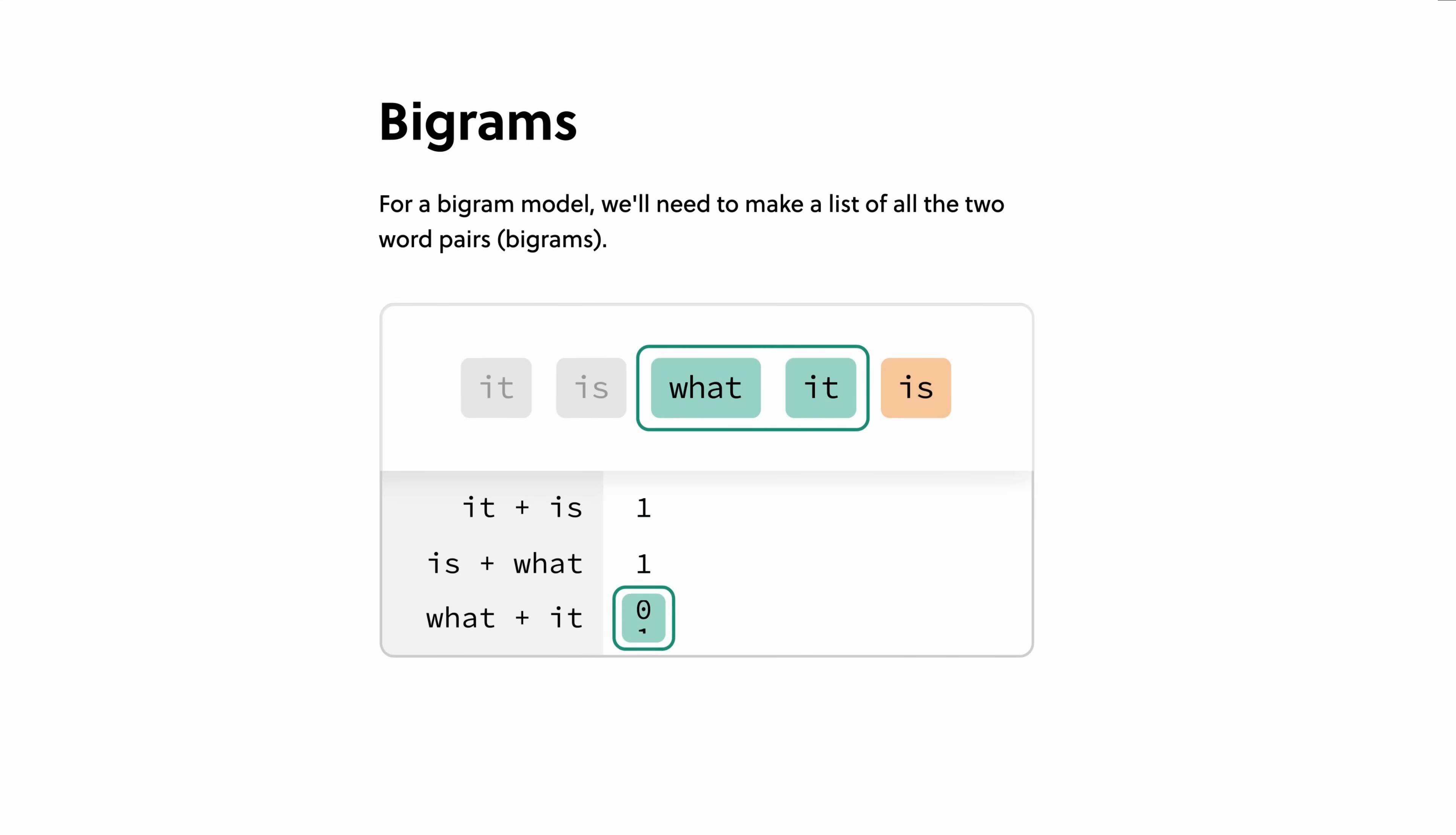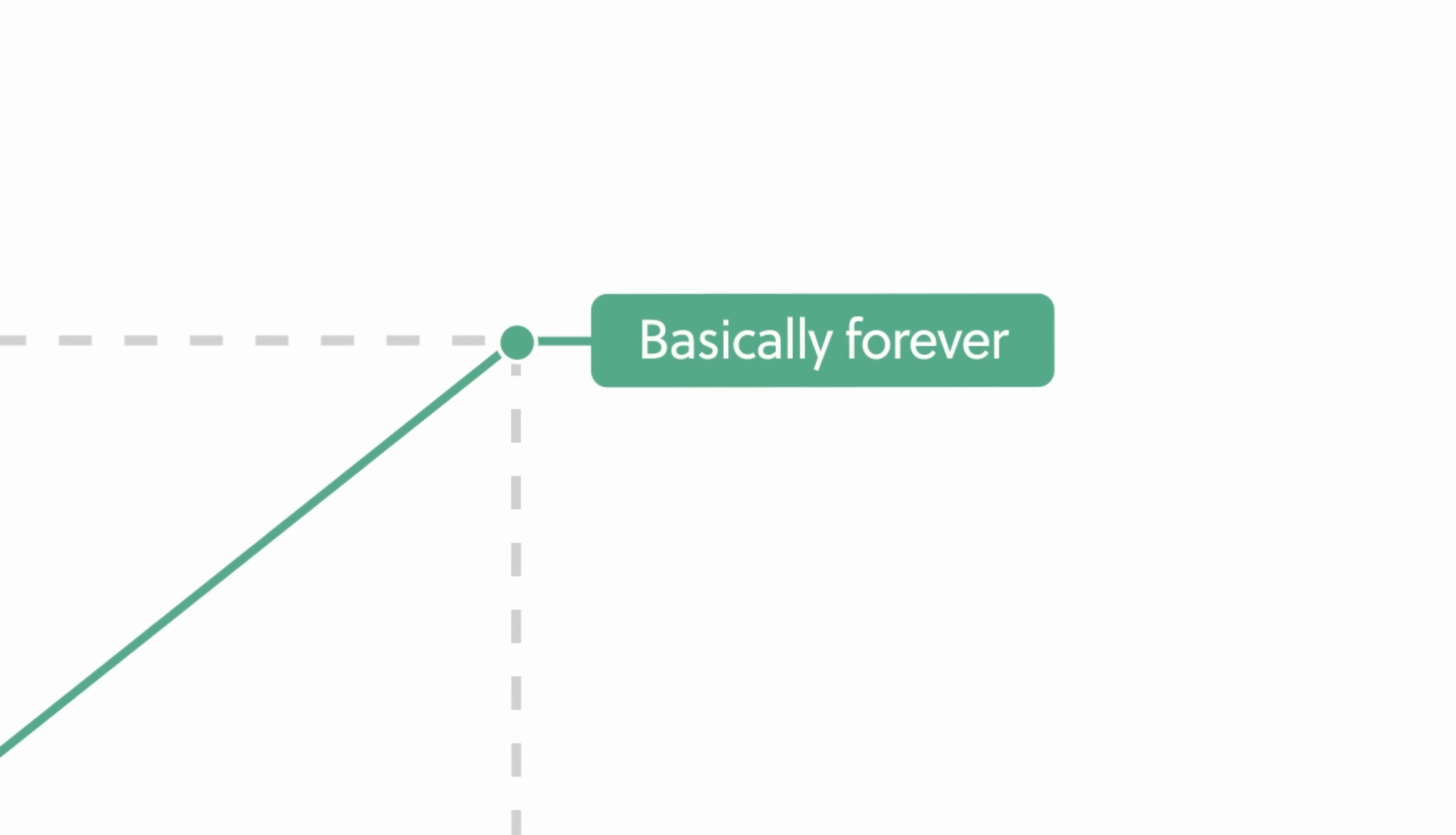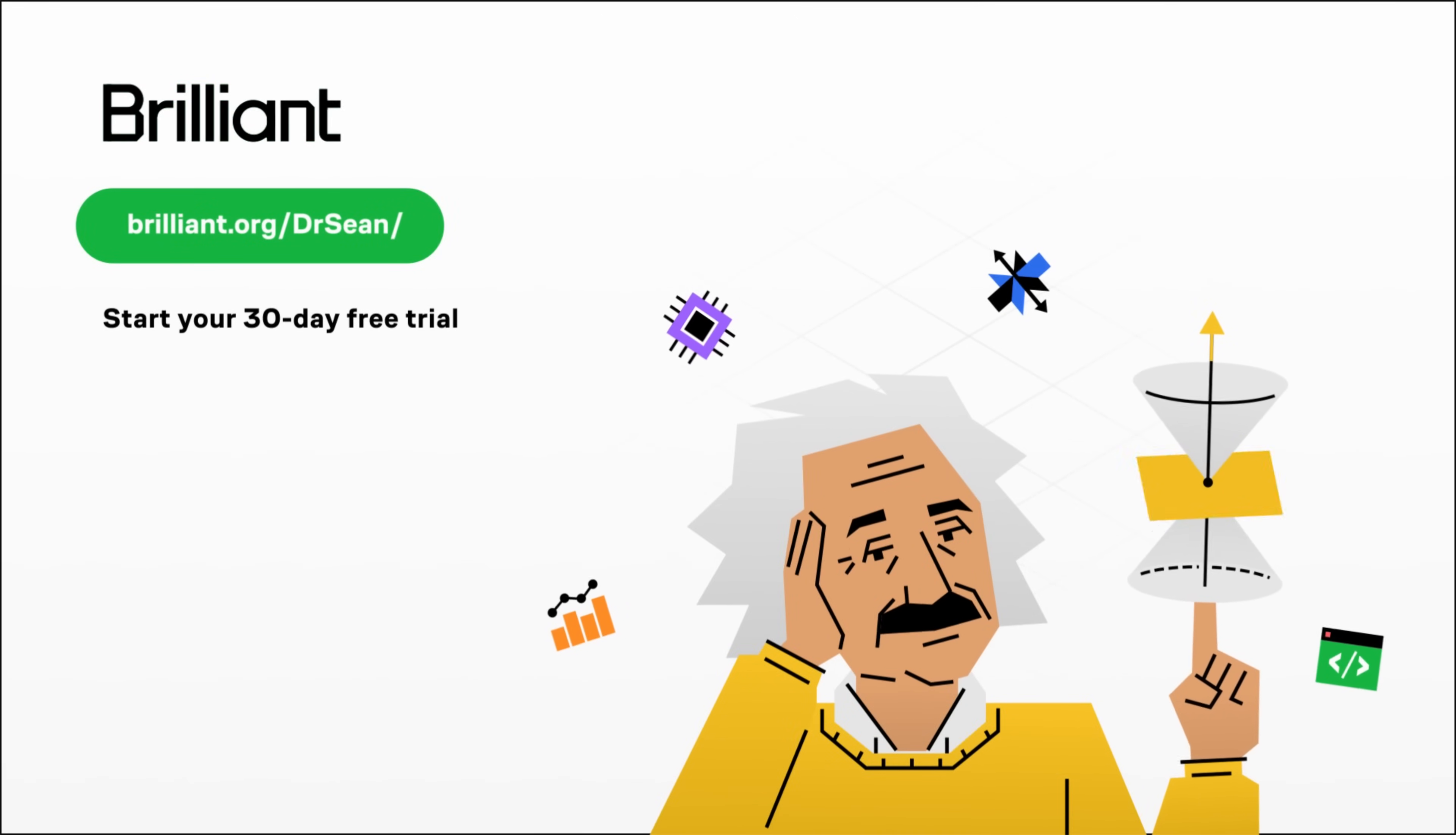For example, instead of just reading about Bayes' theorem, you engage with the ideas, updating probabilities given new information. Brilliant's course How Technology Works takes you inside the tech we use every day, helping you explore how it actually works. You'll explore the math behind what makes a password weak or strong, how your phone can pinpoint your location, and how video compression enables modern video streaming. You can even play with transistors to learn about computer memory. To try everything Brilliant has to offer for free for a full 30 days, visit brilliant.org or click on the link in the description. You'll also get 20% off an annual premium subscription.